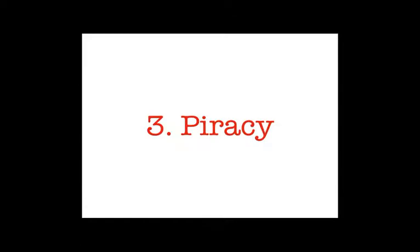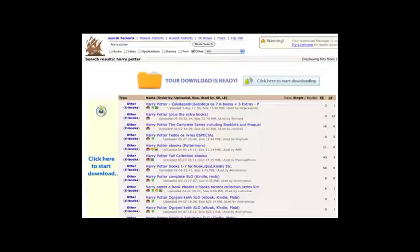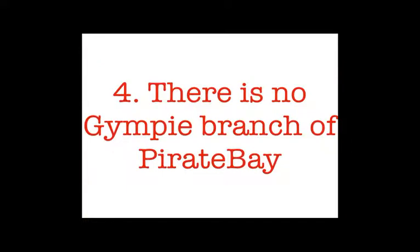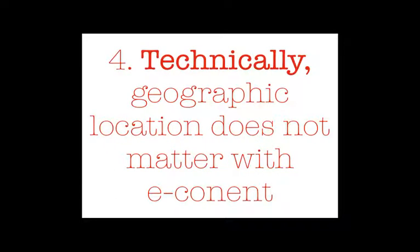Harry Potter brings up the issue of piracy. J.K. Rowling didn't allow e-books to be licensed when she first published the Harry Potter series, so they were pirated. You go to Pirate Bay, type in Harry Potter, and you can see book after book you can download illegally for free — that's how people were getting their Harry Potter e-books. Now, there's no Gympie branch of Pirate Bay, but technically, geographic location doesn't matter with e-content. Somebody in Gympie, somebody in Sweden, somebody in an African country — if they had an internet connection — could all go to Pirate Bay, the single location, and download from that e-content site.